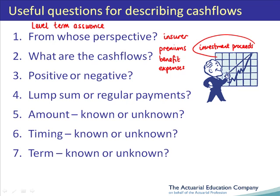Finally, we consider the investment proceeds. In order to match a lump sum term assurance benefit, the insurer is likely to invest in conventional bonds. The investment proceeds represent a positive cash flow to the insurer. There will be regular coupon payments, as well as lump sum capital or redemption payments. If conventional bonds are held, the interest and the capital are both known in nominal terms. The timing of the interest and capital payments is also known, and so is the term. If appropriate — for example, if there's a suggestion in the exam question that corporate bonds are used — we could also mention the possibility of default, which would affect the amount, timing, and term of the payments.